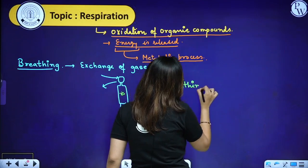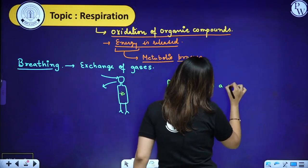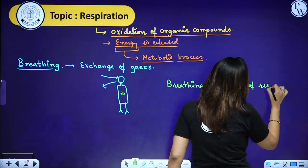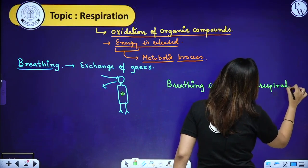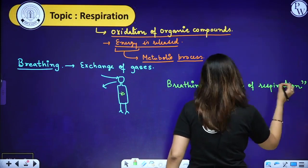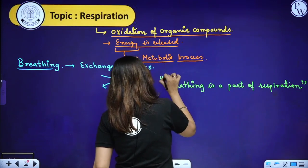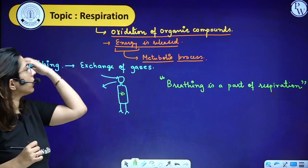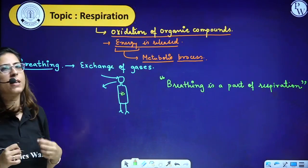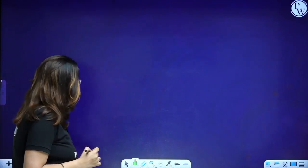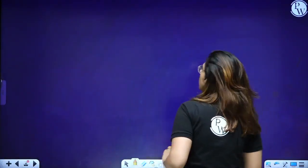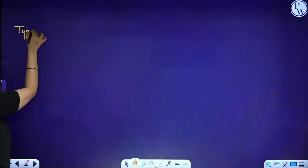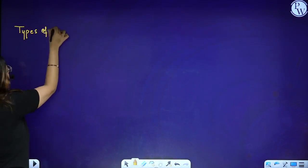So we can say that breathing is a part of respiration. Breathing is the exchange of gases, and that is part of the broader process of respiration. Hope the words respiration and breathing are now clear to you. Now let's talk about the types of respiration.